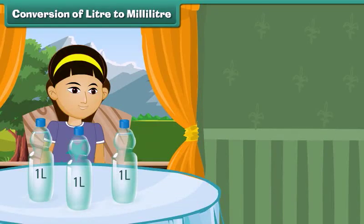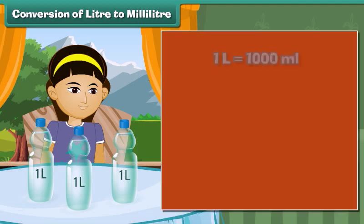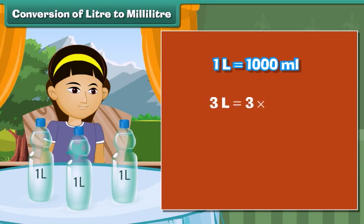Conversion of liters to milliliters: Sonam drinks 3 liters of water in a day. What is Sonam's water intake in milliliters? 1 liter is equal to 1000 milliliters. So, 3 liters is equal to 3 into 1000 milliliters, which equals 3000 milliliters. Therefore, Sonam drinks 3000 milliliters of water in a day.